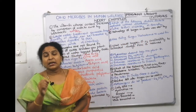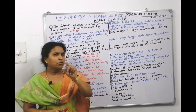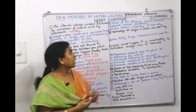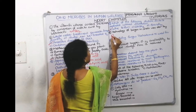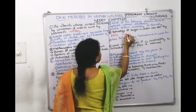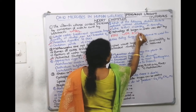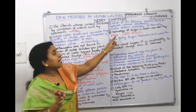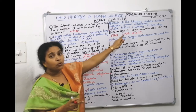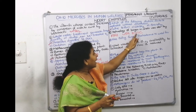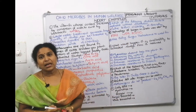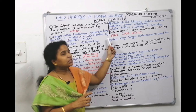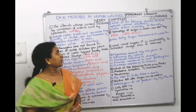Ninth question: biogas technology in India was developed by two organizations — IARI (Indian Agricultural Research Institute) in collaboration with KVIC (Khadi and Village Industries Commission). These two organizations developed the technology of biogas, which is very helpful in villages and rural areas.